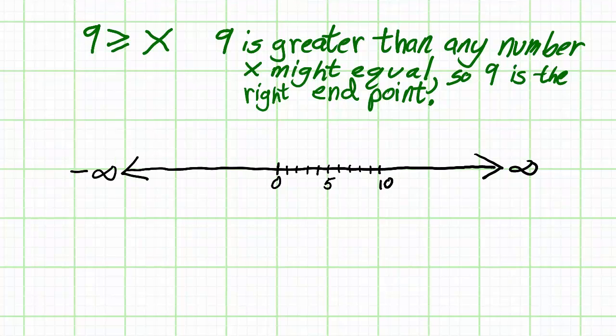I go to 10 on the right and I'm sure to point out where 9 is. I'll have a bracket whose arms are pointing to the left and an arrow going to the left, because remember 9 is greater than any number x might equal.